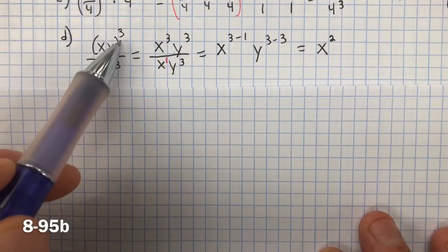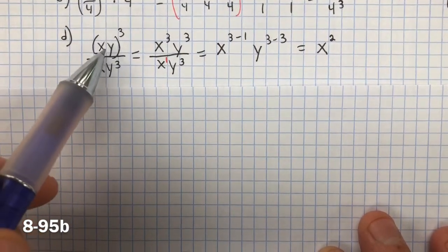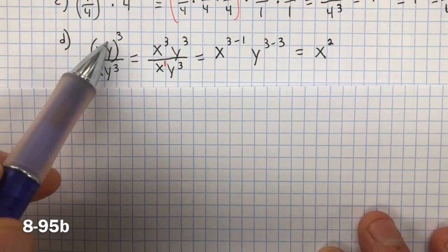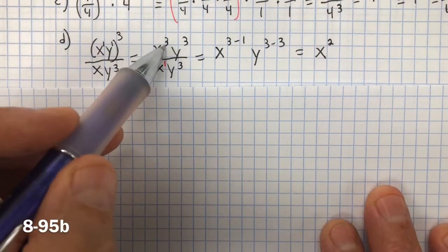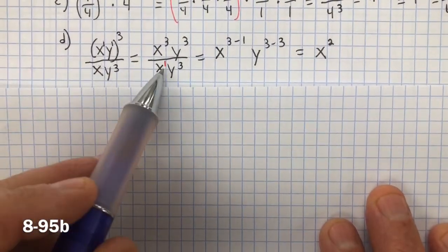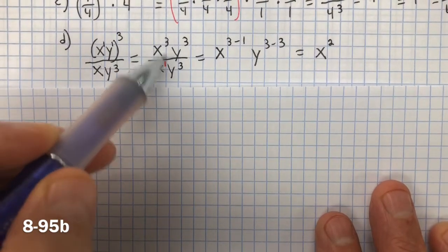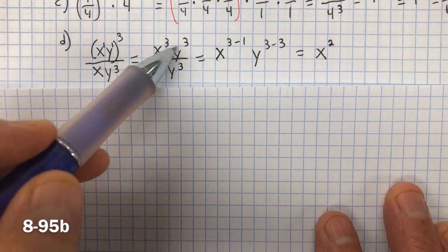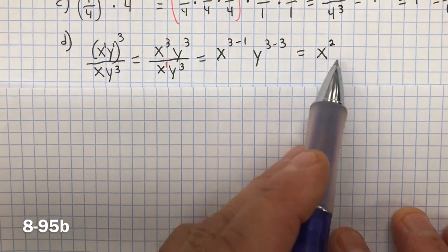For D, I distribute this exponent of 3 to each term inside the parentheses — remember, this exponent belongs to every single term in the group. Using the power-raised-to-a-power rule, you multiply the exponents. I put a 1 on each term: 1 times 3 is 3, so I have x to the third and y to the third. Then for division of integer exponents, subtract: x has 3 minus 1, which is 2. For y: 3 minus 3 is 0. Anything to the 0 power is 1, so we're left with x squared.